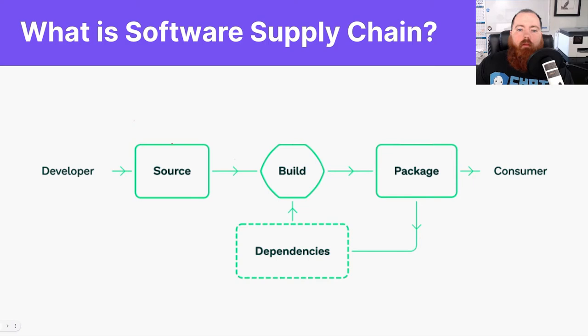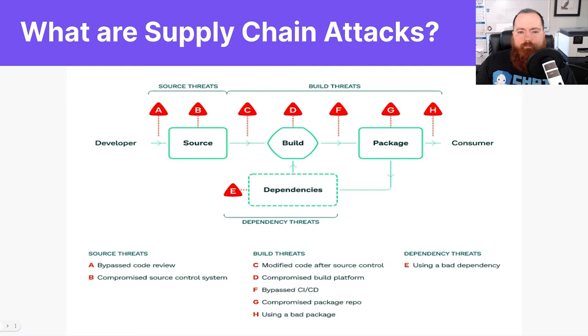Now with that chaining of build processes and packaging comes dependencies and issues where attacks can happen. But what are some supply chain attacks that could happen? With every link in the chain and process, an attacker could introduce malicious code into the process — like at point B when the PHP attack compromised PHP self-hosted Git servers and injected malicious code into the PHP codebase.